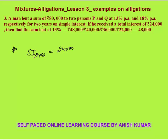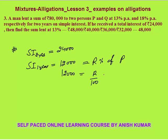For two years the total simple interest is 24,000 on 80,000. So simple interest for one year is half of that — 12,000 — because simple interest is the same every year. Simple interest for one year is r percent of P. So 12,000 equals r by 100 of 80,000, giving r equal to 15. The average total rate of interest is 15 percent. Some money was given at 13 percent, some at 18 percent, and the combined average interest rate is 15 percent.